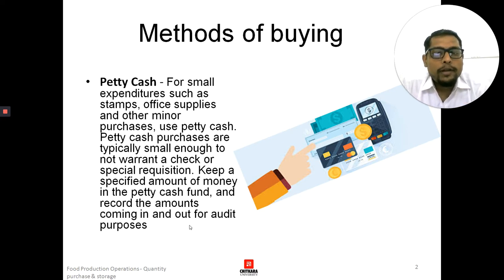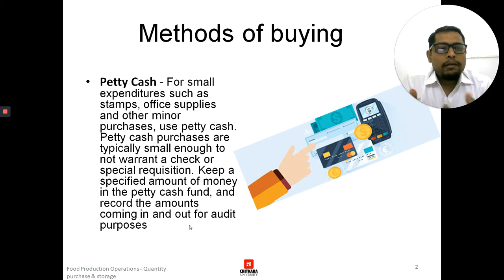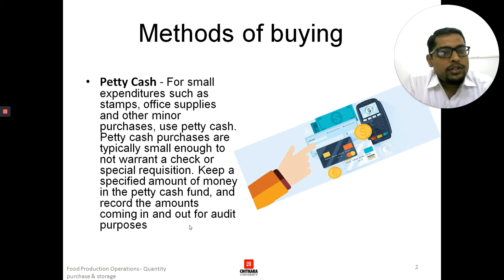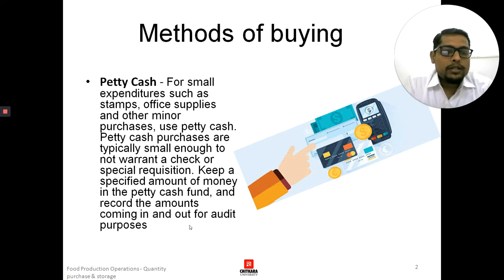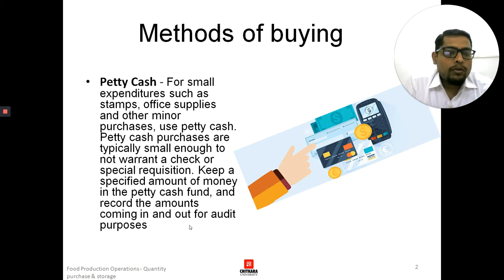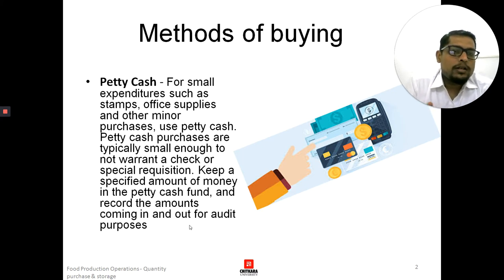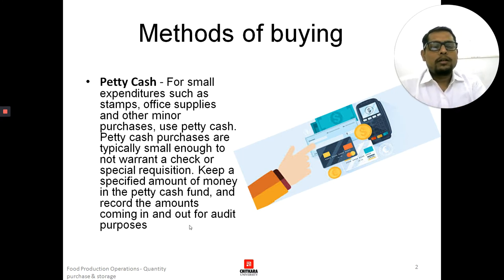Keep a specified amount of money in the petty cash fund and record the amounts coming in and out for audit purposes. Depending upon the size of the company, the petty cash fund is allocated accordingly. All office stationery — pens, pencils, rubber, scales, paper, paper clips — these kinds of small things can be purchased by petty cash. The cash inflow and outflow must be recorded in a register so that at the end of the month, quarter, or audit cycle, the auditor knows how much petty cash you had and how much you spent. Petty cash is generally used for day-to-day small purchases.